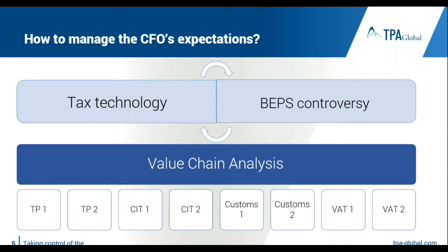With extensive exchange of information between tax authorities, it is possible for them to judge whether the value chain analysis in your master file matches your CbC reporting, local country files, CIT returns, and indirect filings. The way to tie it all together is a value chain analysis. The OECD prescribes one approach; China, as an aggressive tax authority, has provided a far more extensive approach, and other countries are following suit. Not conducting a value chain analysis aligned with all compliance reporting puts you at increasing risk of controversy — and tax technology is the way to manage that controversy effectively.